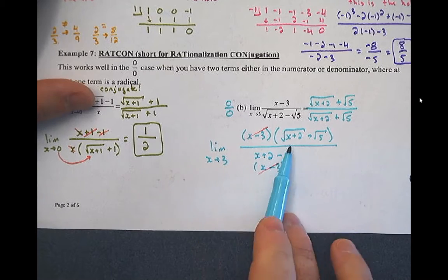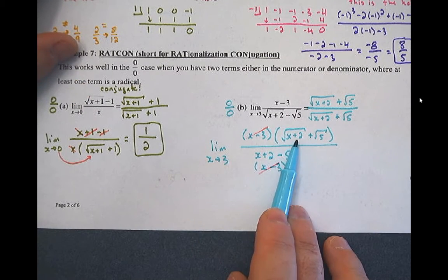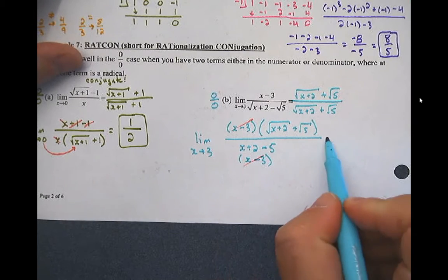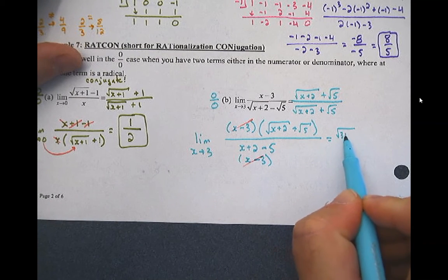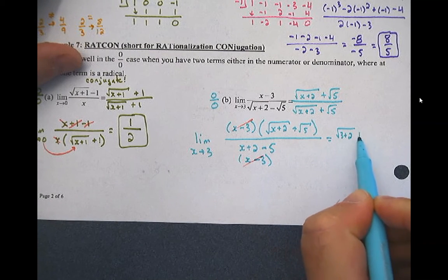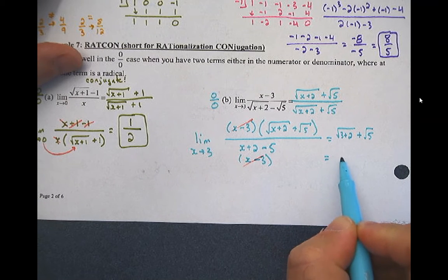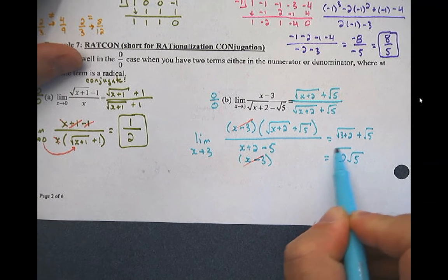Now I can direct substitute: three plus two is five, so root(3+2) plus root(5) is root(5) plus root(5), which is two root(5).